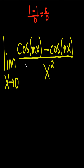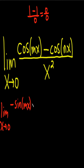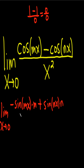So we should use something called L'Hôpital's Rule, which basically says we can just take the derivative of each piece. The derivative of cosine is negative sine, so this is negative sine mx, times the derivative of the inside, which is m, by the chain rule, minus — or rather plus — sine nx, because it's already negative, times n, all over the derivative of the bottom, which is 2x.